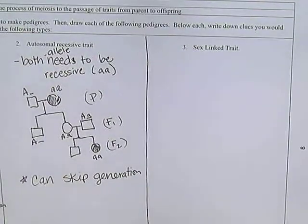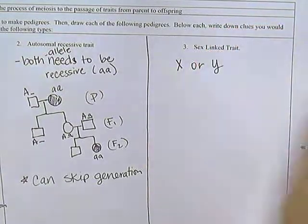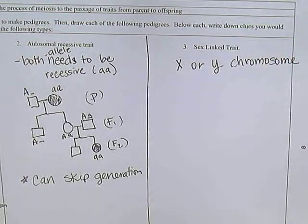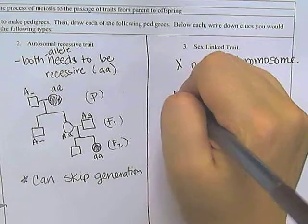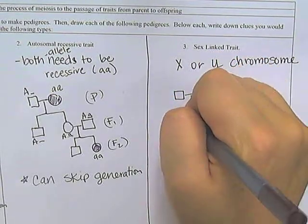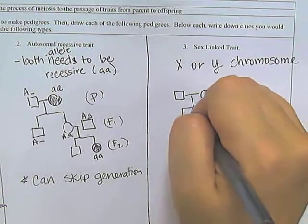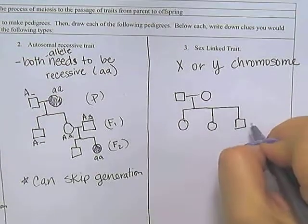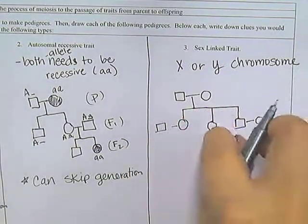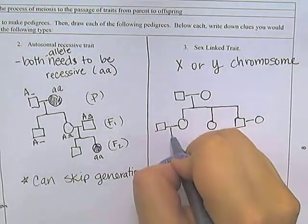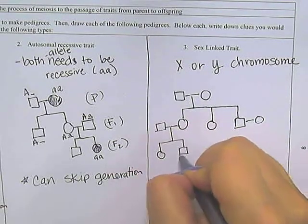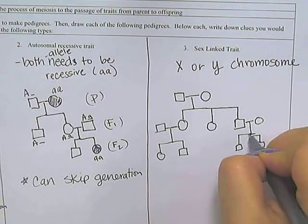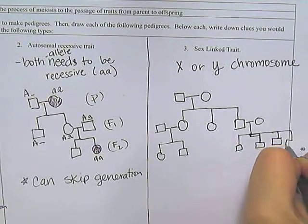The last one we're going to look at is the sex-linked. This is going to be the X or Y chromosome. So this is like male pattern baldness, colorblindness, hemophilia. It's traits that follow on the X or the Y chromosome. So when you draw your tree, let's go ahead and draw three children. And we'll draw spouses for these ones. This one's not married and having kids yet.